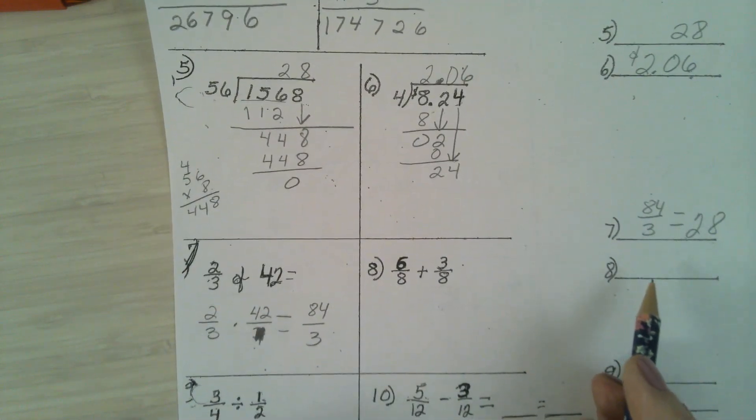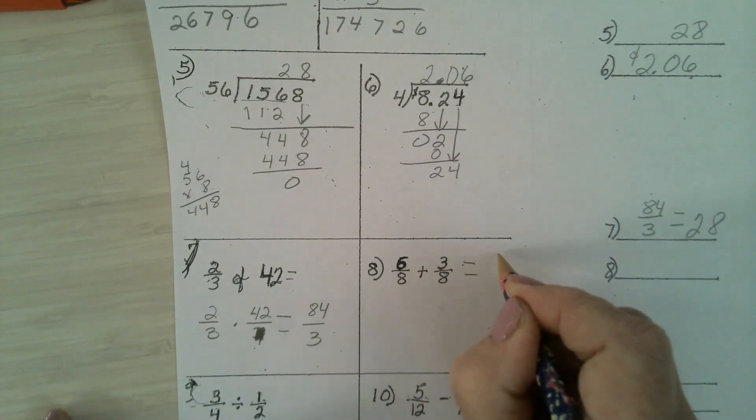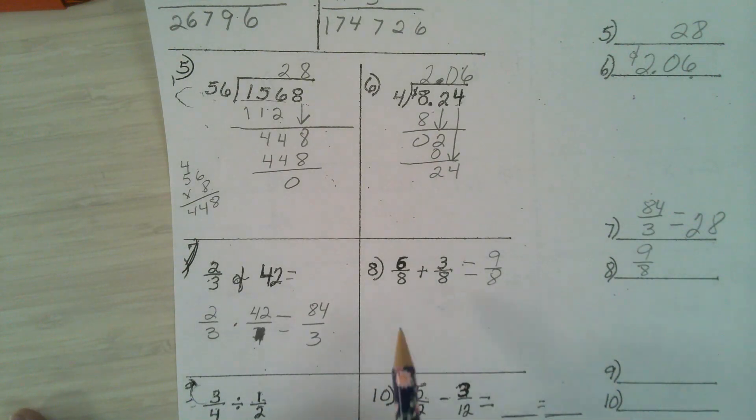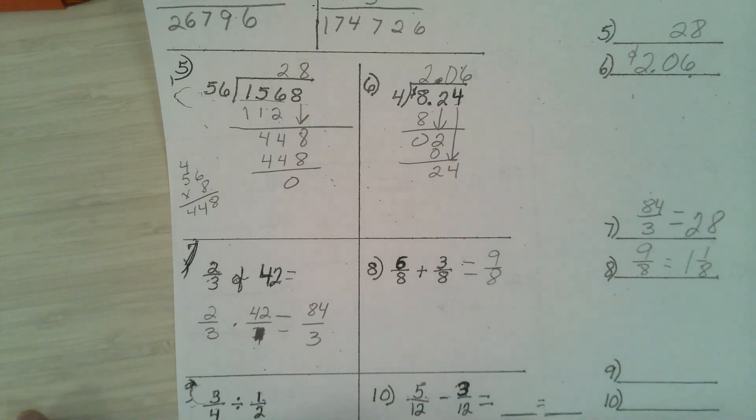Number 8. Everyone should have gotten this one right. Because they have the common denominator. 9/8. You just add the numerators. When you add or subtract, the denominators have to be the same. And it was already the same. You could have simplified to 1 and 1/8. Any questions?